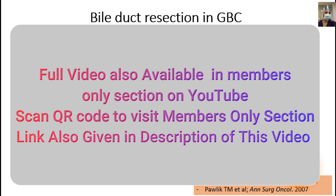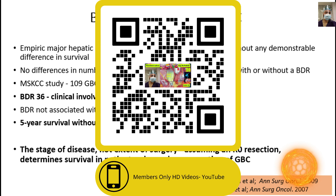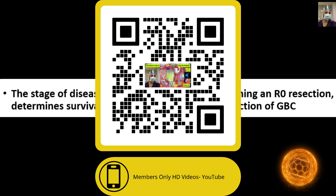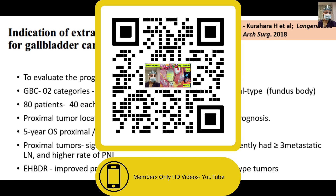From the MSK study data, the five-year survival without bile duct resection was 49%, which was significantly higher. The stage of disease — not the extent of surgery — determines survival, provided R0 resection is achievable. This is supported by another paper by Kurihara et al. analyzing extrahepatic bile duct resection, categorizing 80 patients into proximal (toward the neck) and distal (toward the fundus) tumor types.